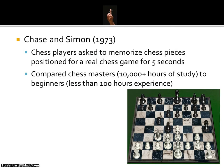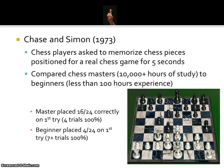Chase and Simon did a very famous experiment where they wanted to see how chess players use chunking to aid their memory. They asked chess players to memorize chess pieces positioned in a real chess game for about five seconds, comparing chess masters — those with over 10,000 hours of study and play — to beginners with less than 100 hours of experience. They found that chess masters were better at memorizing the positions: on the first try, masters were able to place 16 out of 24 chess pieces correctly, and after only four trials they reached 100% accuracy. Beginners, on the other hand, could only place four of the 24 pieces correctly on the first try, and it took them at least seven or more trials to reach 100% accuracy.